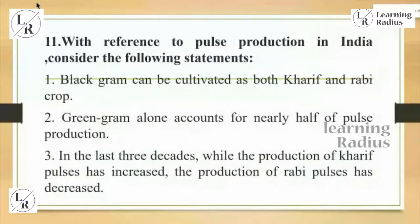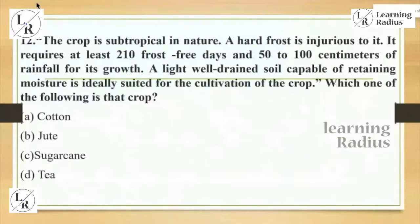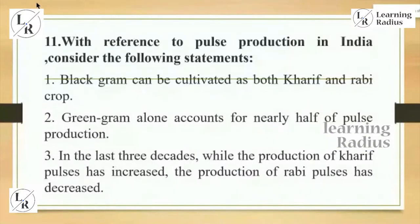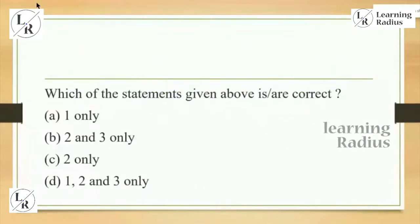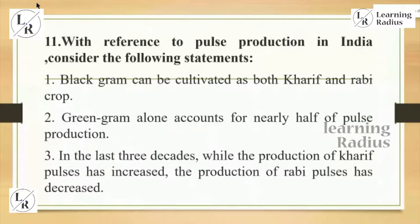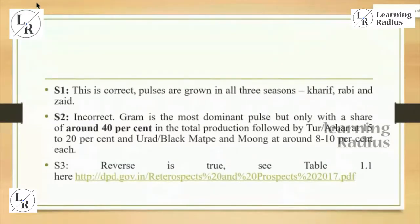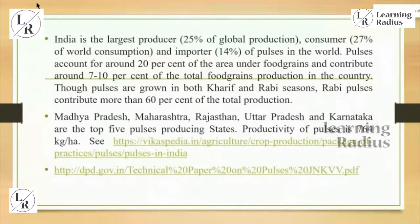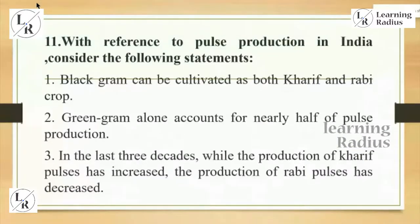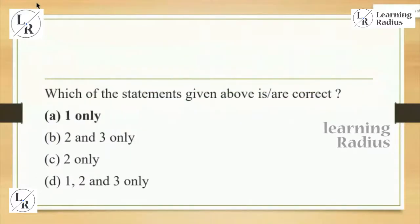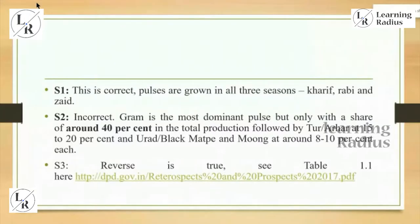With reference to pulse production in India, the discussion relates to Kharif and Rabi crops. Of three statements, only the first statement is right; the second and third are wrong. This is not purely current affairs but from physical geography combined with understanding of Indian agriculture. Gram is the most dominant pulse with a share of around 40% in total production, followed by tur and urad. To get the answer right, you need fundamental clarity on how much black gram and green gram we cultivate — the second statement was made wrong, and that is the key to the answer.